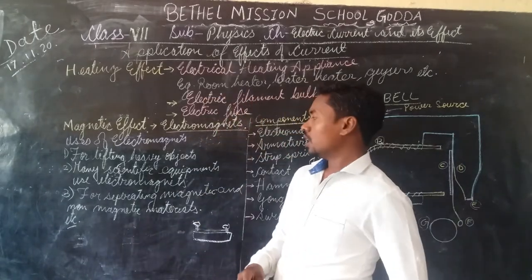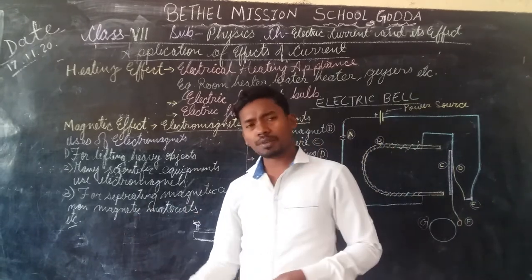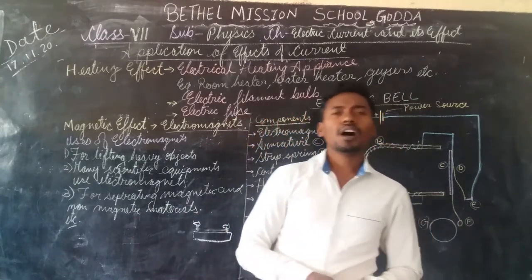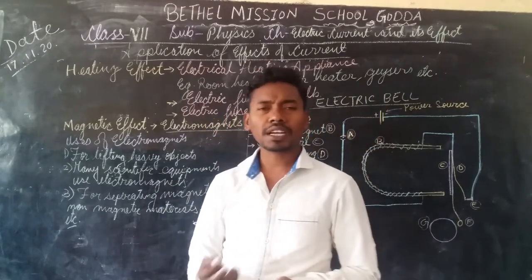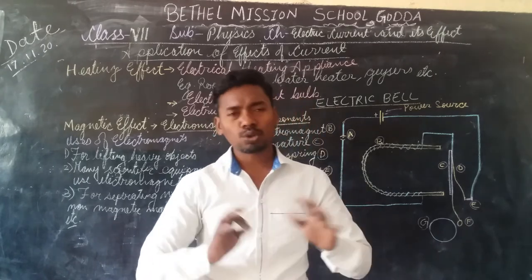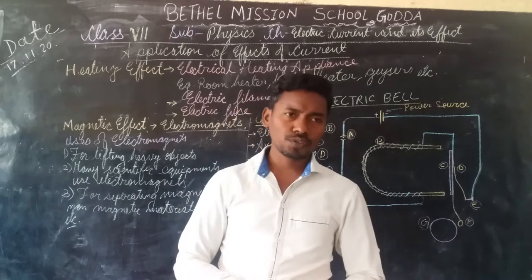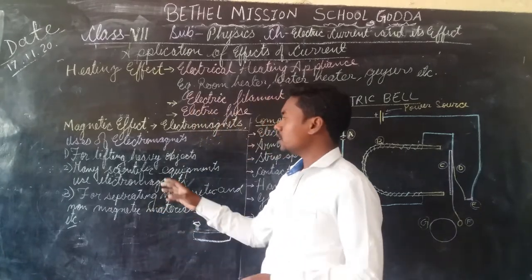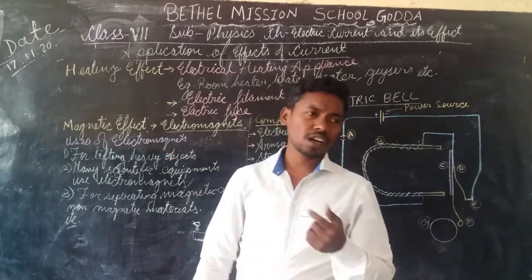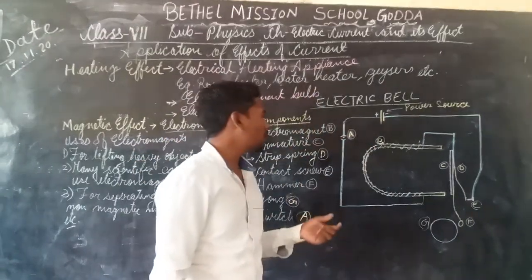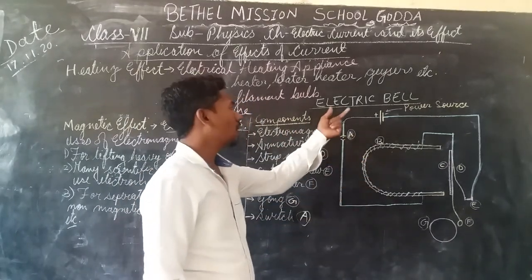Another application is separating magnetic material from non-magnetic material. When we have different types of materials mixed together — some magnetic and some non-magnetic — the electromagnet is very useful for separating them. To understand how electromagnets work, we have a very simple machine that works on the electromagnet principle: the electric bell.